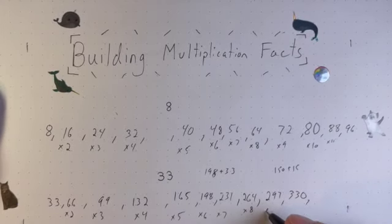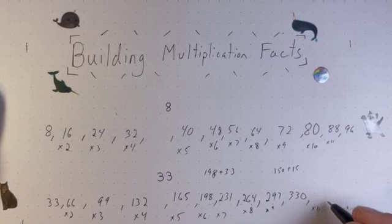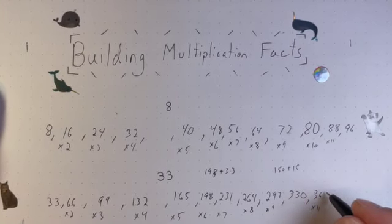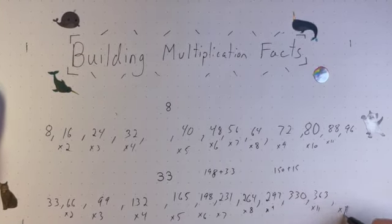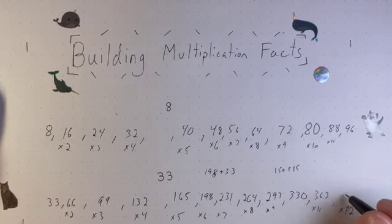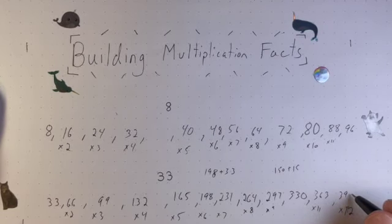And then to go up from my times 10 to get my times 11, I just add one more 33 to get that. And then for times 12, I just add another 33 for 396.